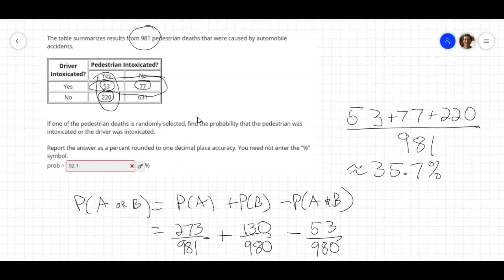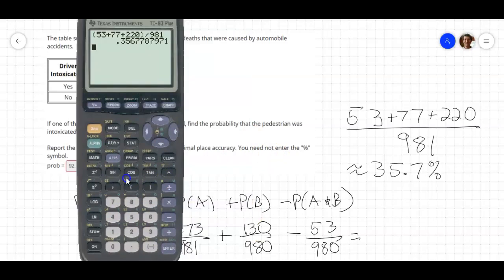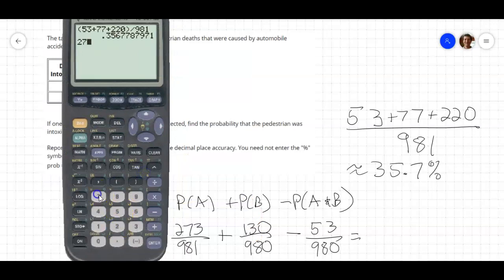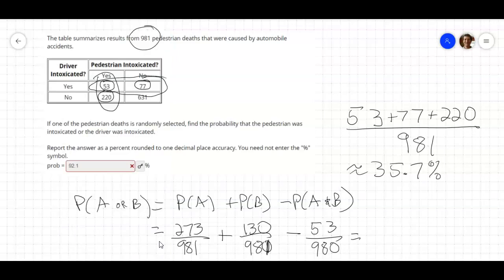So if we work this out in our calculator, we have 273 divided by 981 plus 130 divided by 981 minus 53 divided by 981, and we get the same number. So either way, we get the same result.